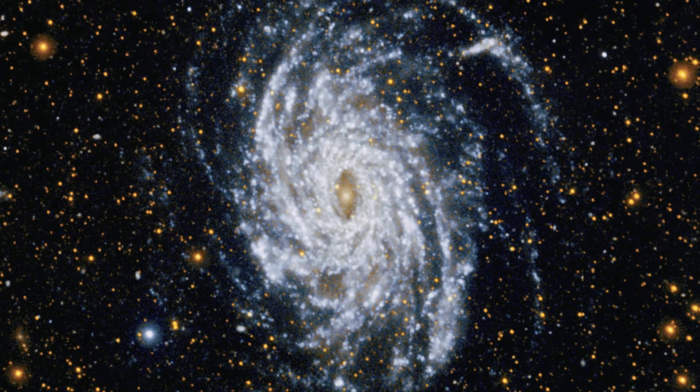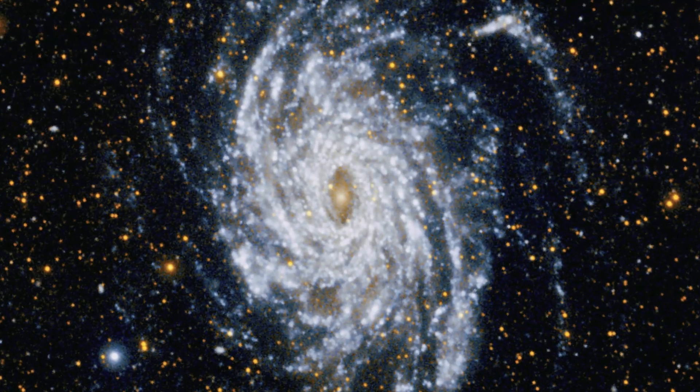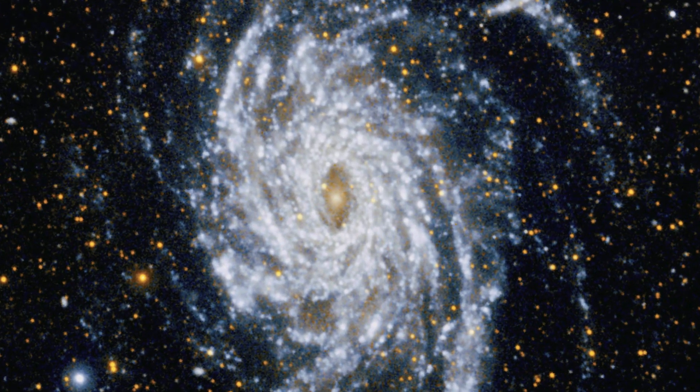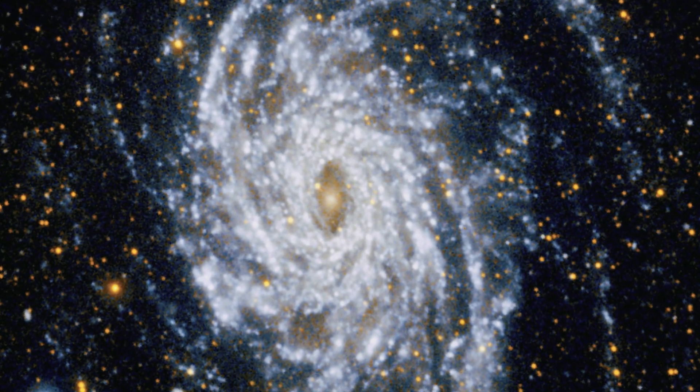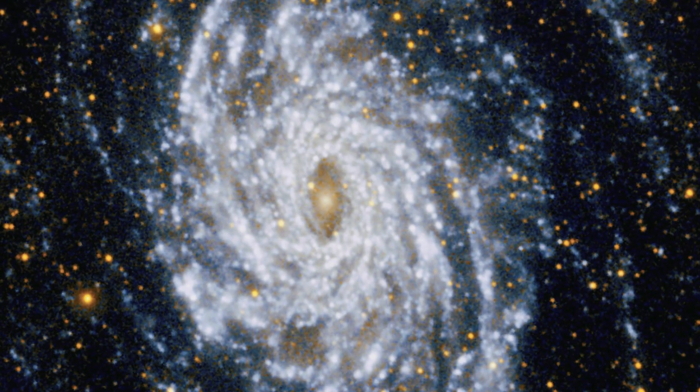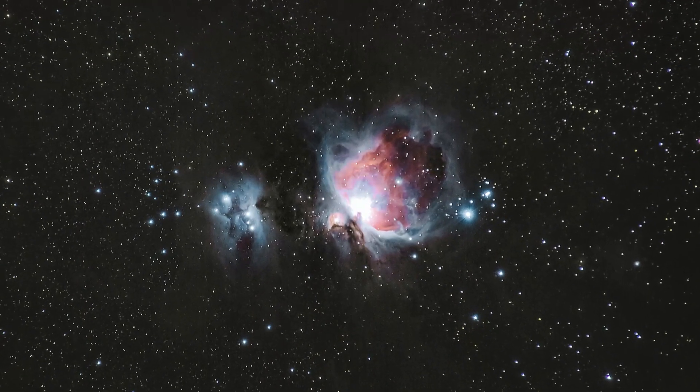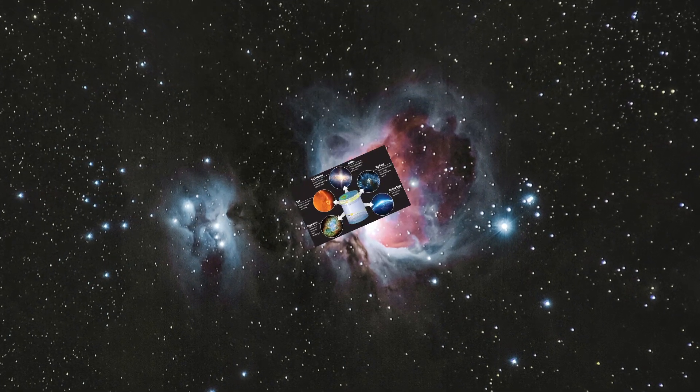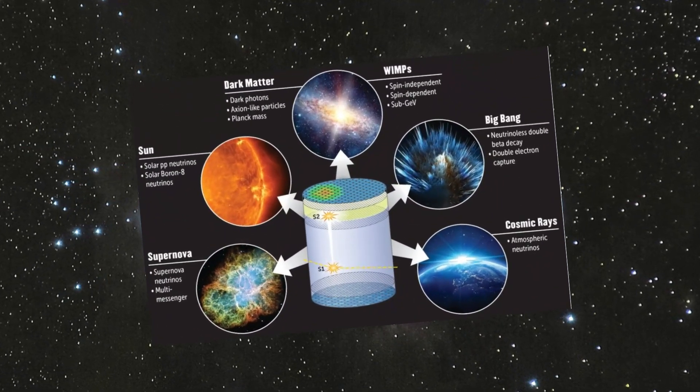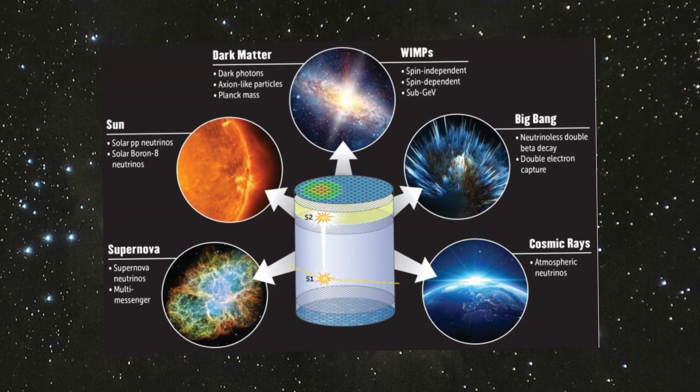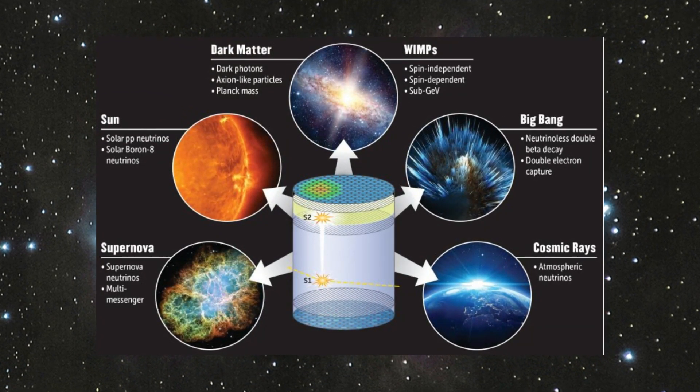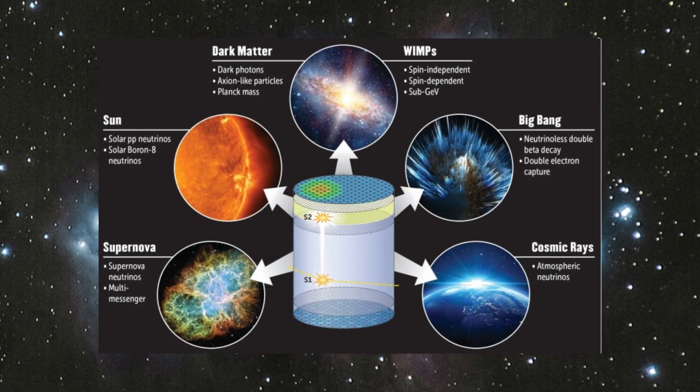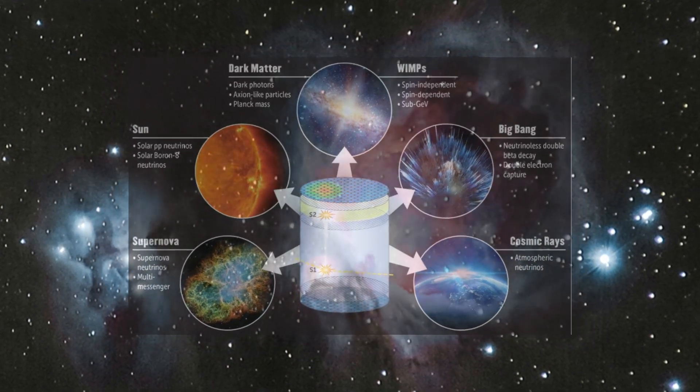Another possibility is that dark matter is composed of known particles, but they interact very weakly with visible matter, making them virtually undetectable by current experimental methods. This hypothesis has been explored through direct detection experiments, in which scientists seek to capture dark matter particles when they interact with ordinary matter. However, the results of these experiments have not yet provided definitive confirmation of the existence of dark matter particles.